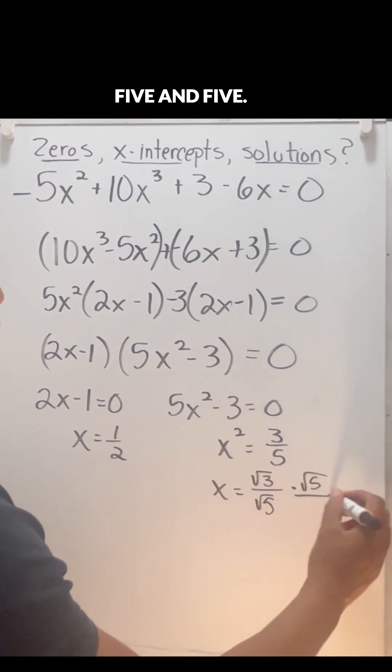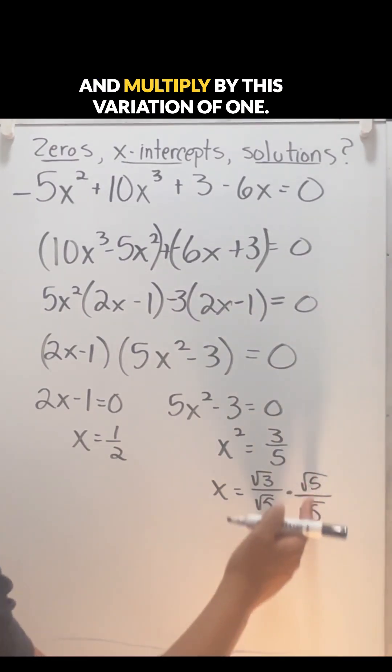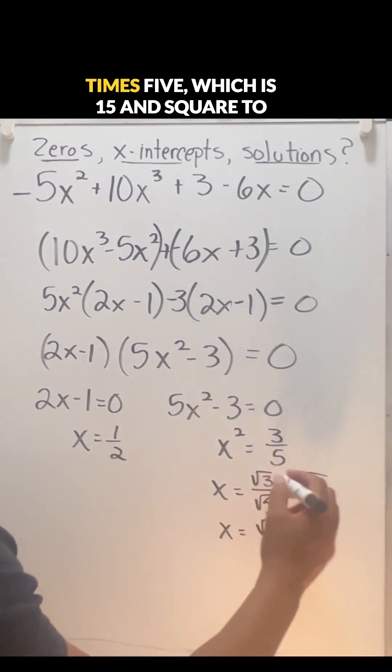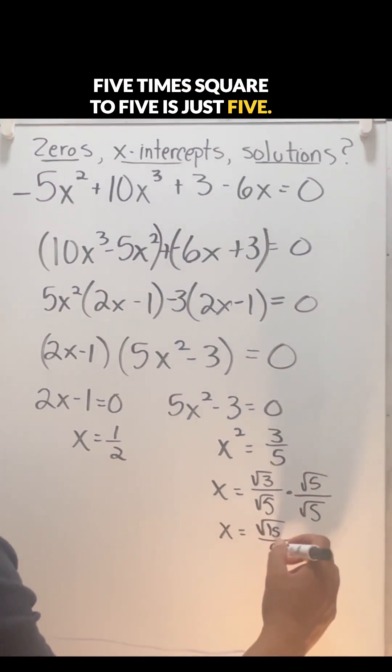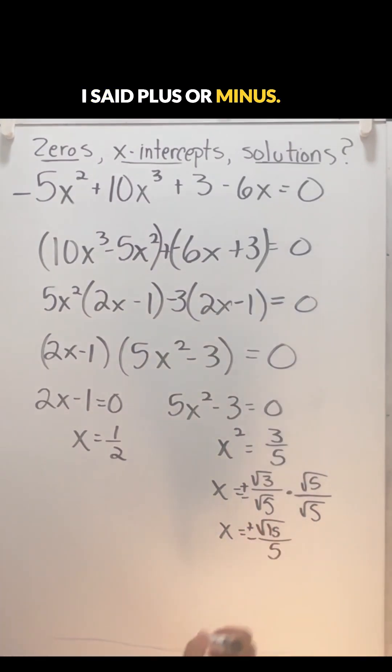This is going to be times square root of five and square root of five. What's that called when I do that? Multiply by this variation of one. I think you guys know what that's called. If you know what it's called, tell me in the comments. I'll have square root of three times square root of five, which is square root of 15, and square root of five times square root of five is just five. All that is plus or minus. Yes, I said plus or minus. I meant to say that.